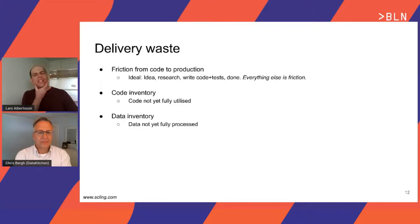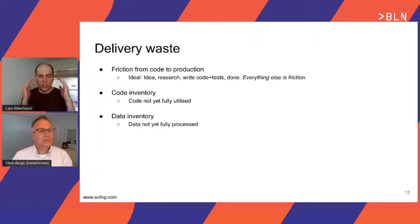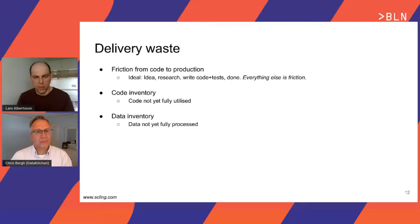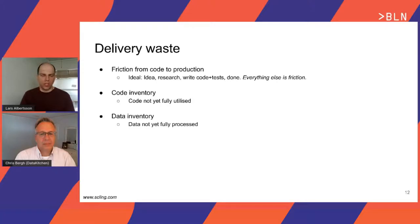Moving to a different type of waste: the friction to get things out the door, from the idea in your head to writing code and getting it into production. In an ideal world there's an idea, some research, writing code, production, and then repeating that cycle. Anything else you do is friction and waste. In the Lean world there is also 'inventory' — one form of waste — which is things you have done but haven't yet reached end users. In data processing we have both code inventory, like code not yet in production, as well as data inventory, data not yet fully processed.